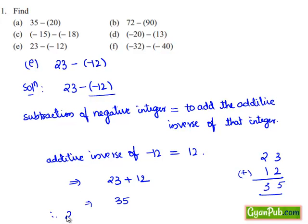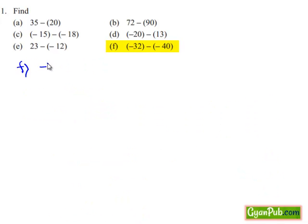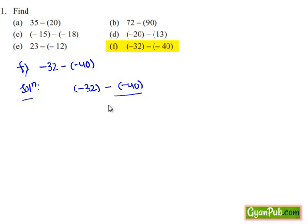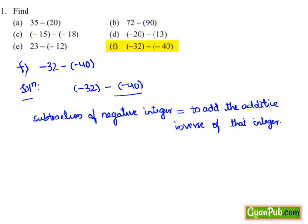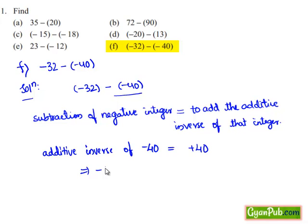The solution of 23 minus of minus 12 is 35. Taking down the last part f: minus 32 minus of minus 40. Here we are subtracting a negative integer. To subtract a negative integer, we add the additive inverse of that integer. The additive inverse of minus 40 is plus 40. So we are adding minus 32 to plus 40.